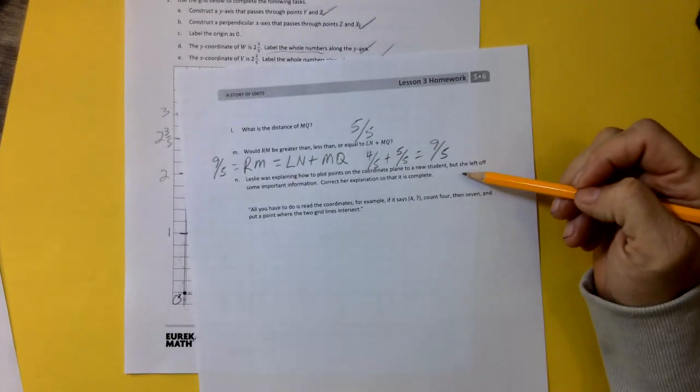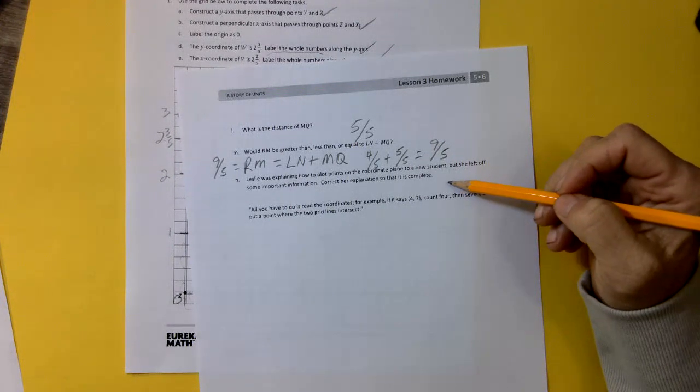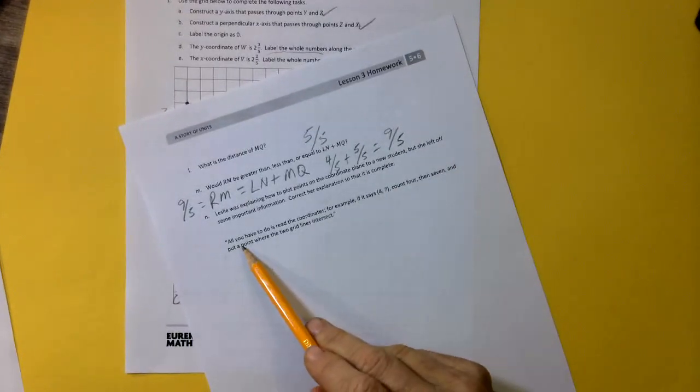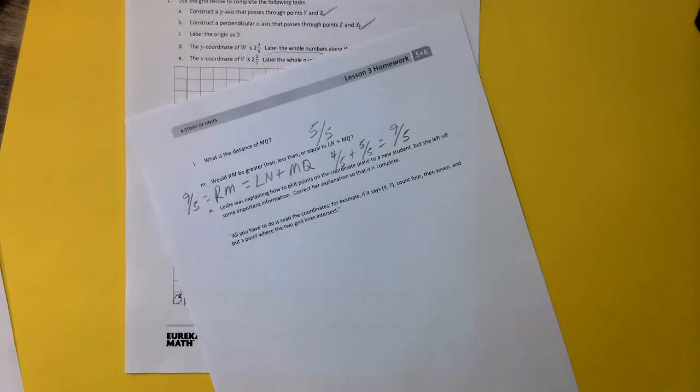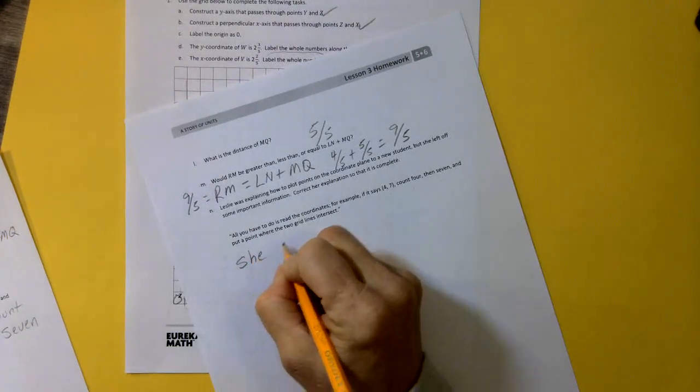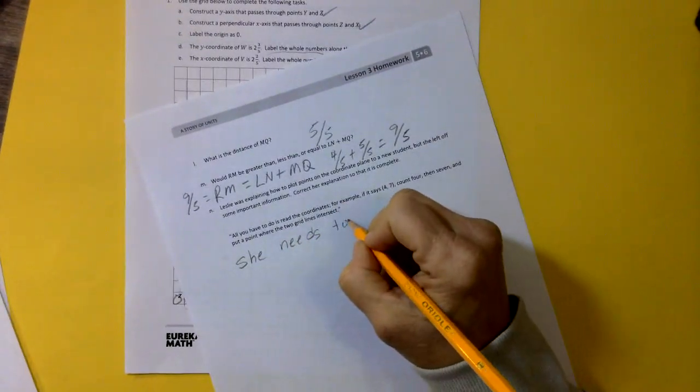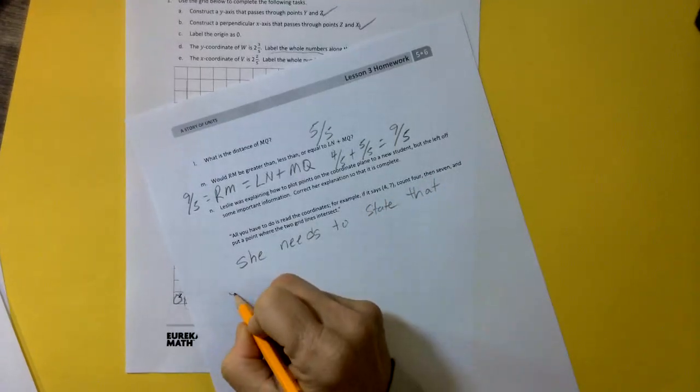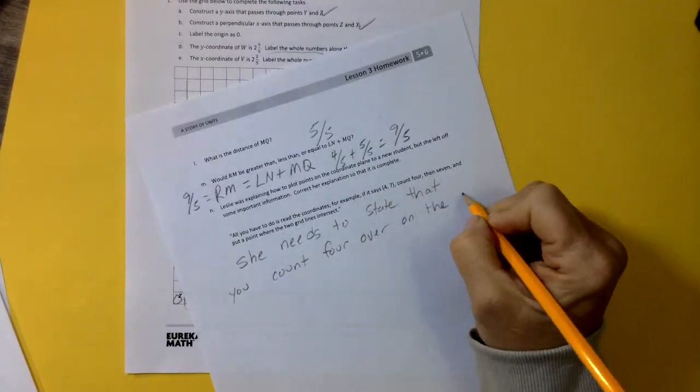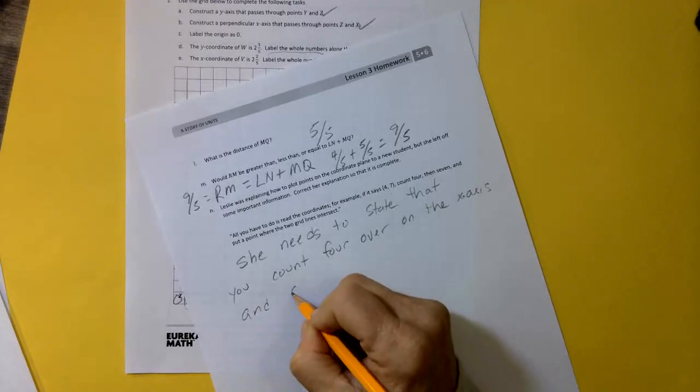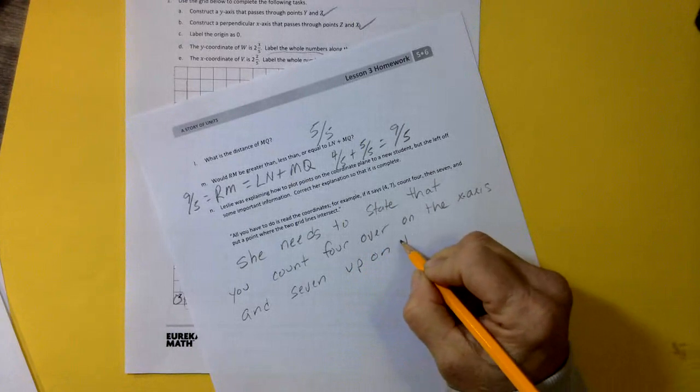All right. Leslie was explaining how to plot points on the coordinate plane to a new student, but she left off some important information. Correct her explanation so that it is complete. She said, all I have to do is read the coordinates. For example, it says 4, 7. Count 4, then 7. And put a point where the two grid lines intersect. All right. So what did she forget to do? She forgot to tell where we needed to move. We needed to move 4 on the x-axis and we needed to move 7 on the y-axis. Right? So she needs to state that you count 4 over on the x-axis and 7 up on the y-axis.